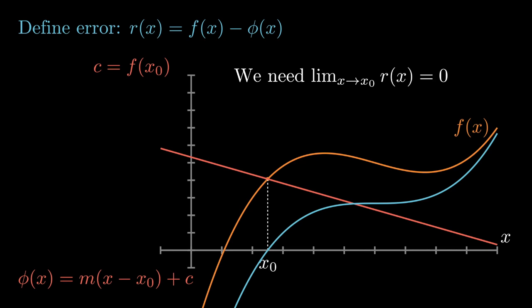Making that limit go to zero is not very hard to achieve. All we need to do is make the constant c equal to the value of f at x0. This has the effect of causing our approximation to intersect f of x right at x0, which is what we want.